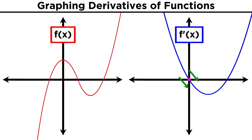If a derivative crosses the x-axis from above, the function has a local maximum at that point. If a derivative crosses the x-axis from below, the function has a local minimum at that point.